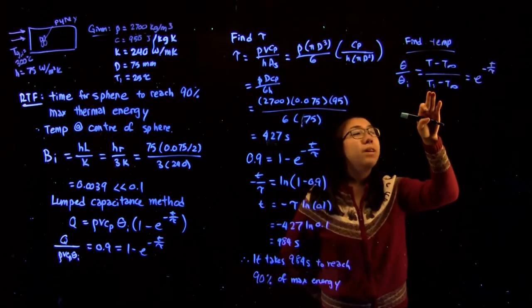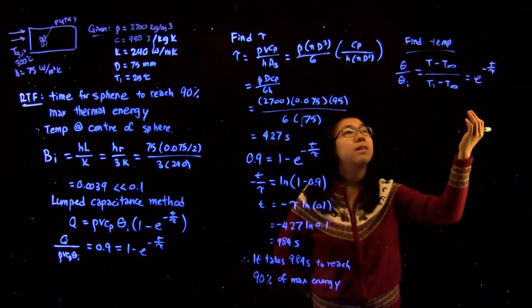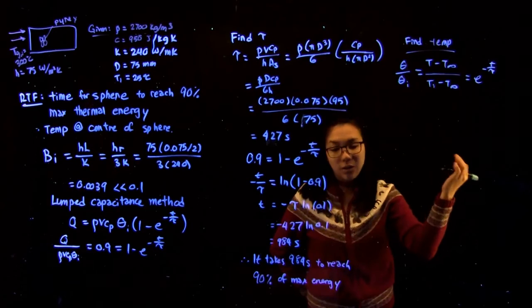We have the initial temperature, T infinity, the time, and the time constant. So the last thing is to isolate for the actual temperature itself.